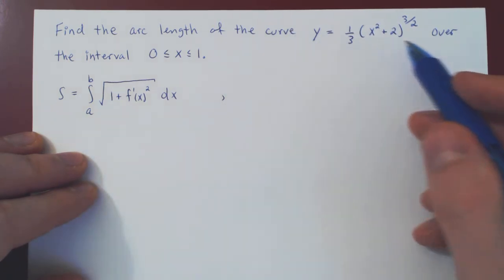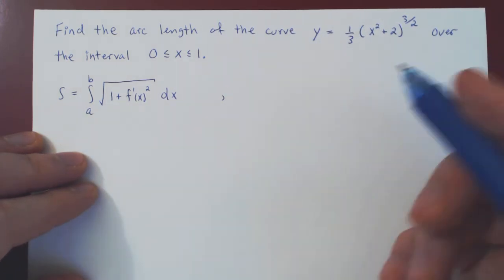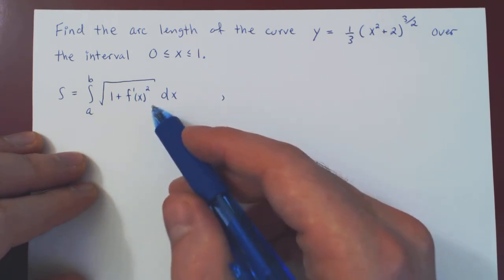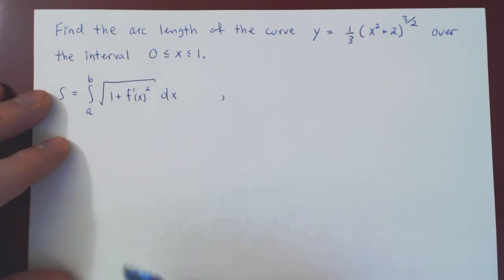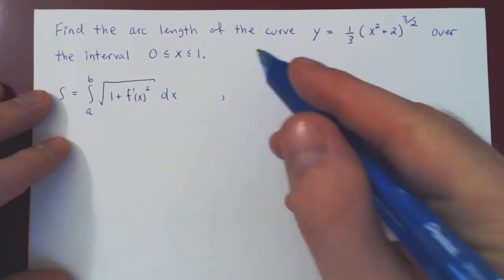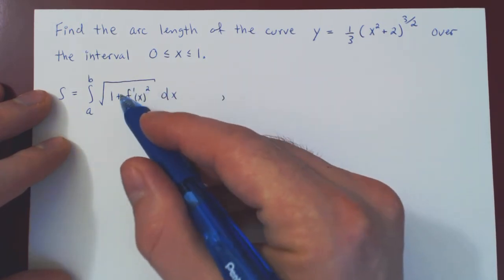So all the examples you will encounter in this course are essentially cooked up so that it is possible to evaluate the integral exactly, which means if you make a mistake in the derivative, odds are you will have an impossible integral.